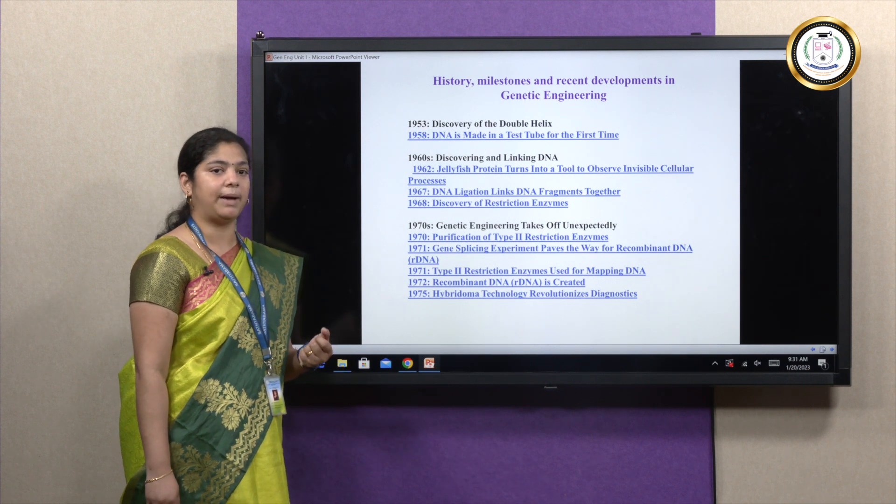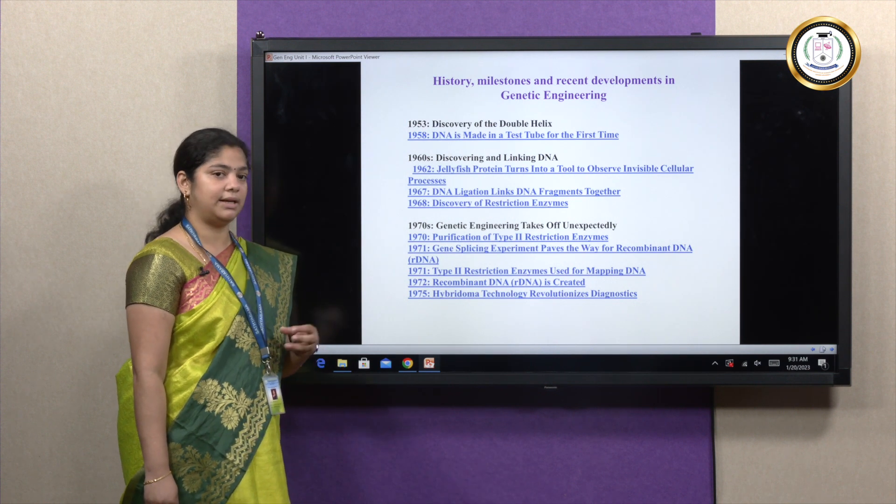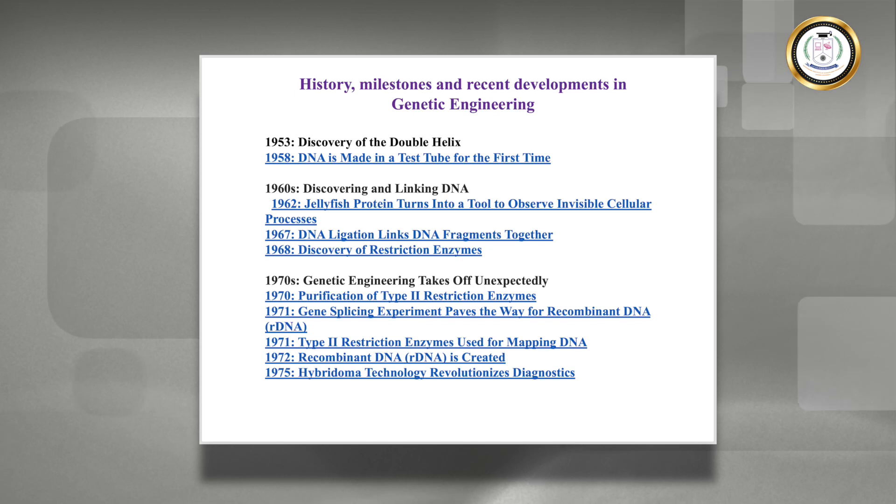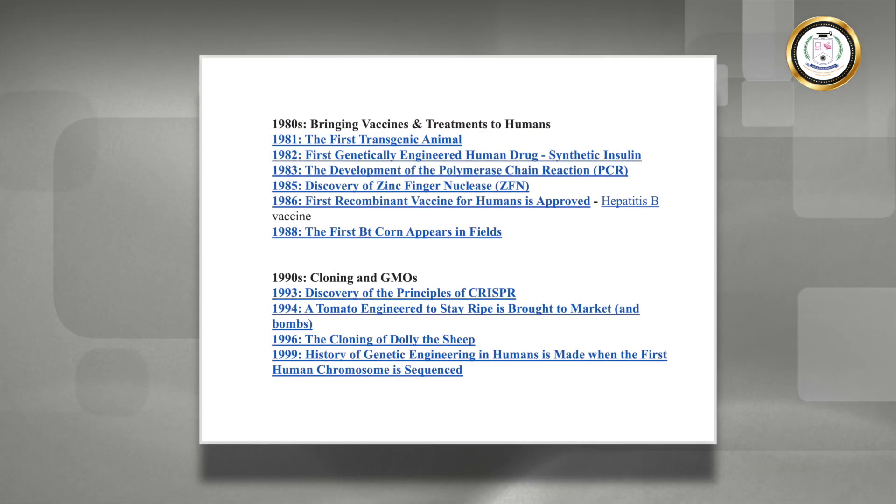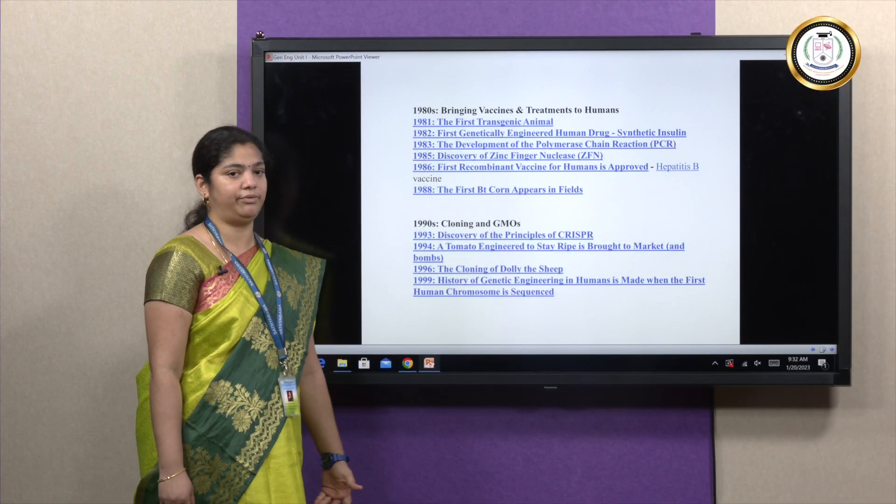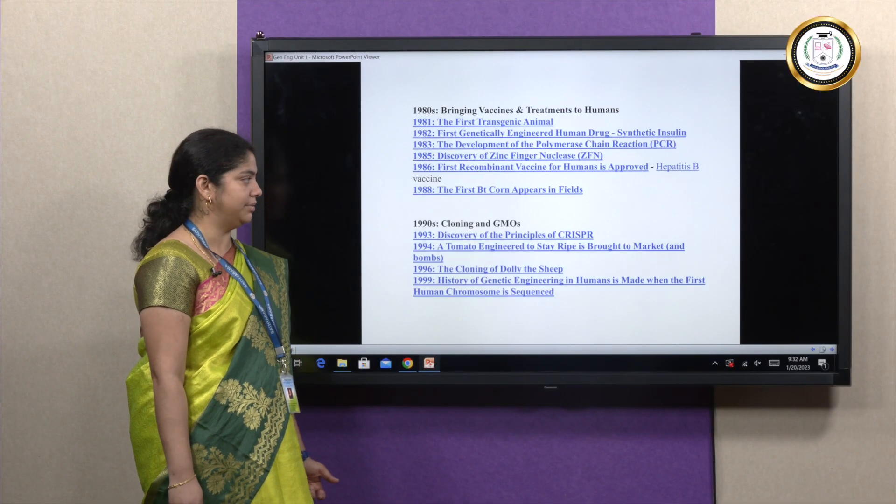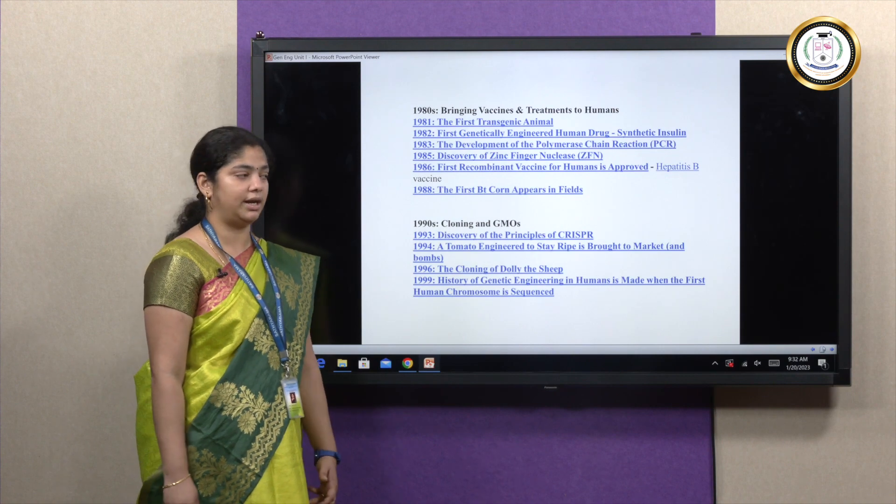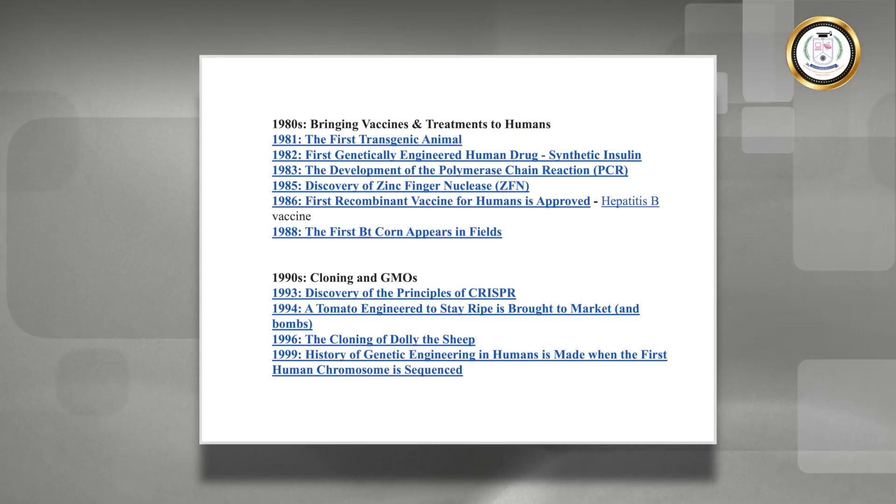We can see the enzymes that are used—DNA ligation enzymes and restriction enzymes. By the era of 1980s we can see there is bringing of vaccines and treatments to humans, where they have discovered new zinc finger nucleases and new enzymes that can be used in genetic engineering. The very first recombinant vaccine was also approved during 1980s, which is hepatitis B vaccine.